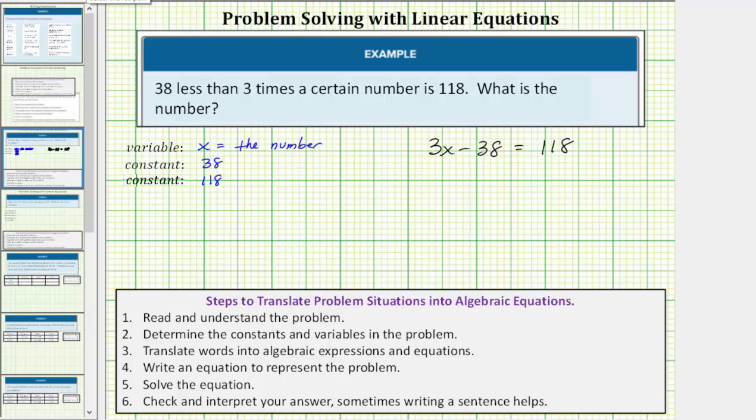So to solve the equation, the first step is to isolate the variable term by undoing the subtraction. So for the first step, we add thirty-eight to both sides of the equation. Now we simplify. Minus thirty-eight plus thirty-eight is zero, so we have 3x on the left equals 118 plus 38 is equal to 156.